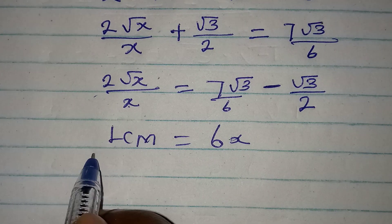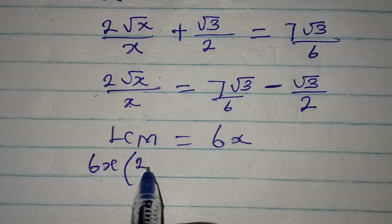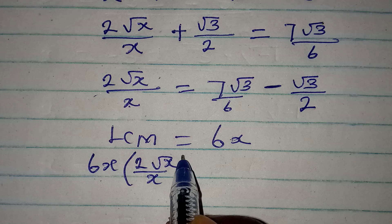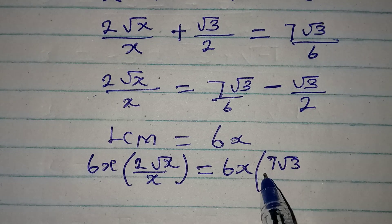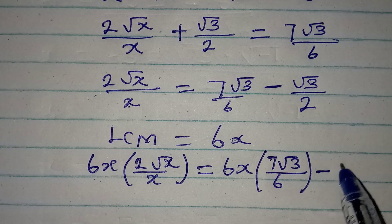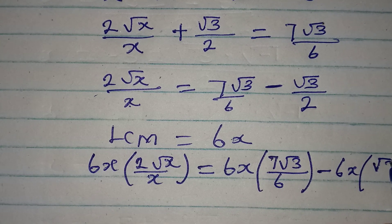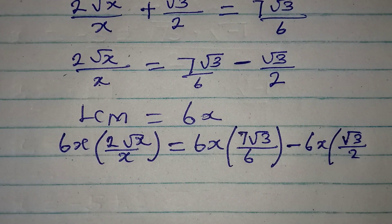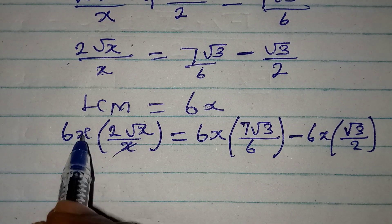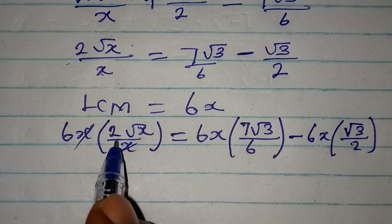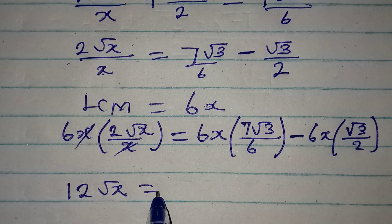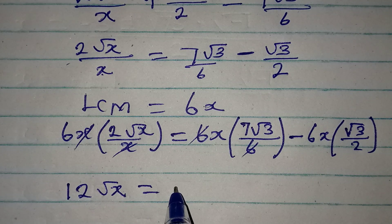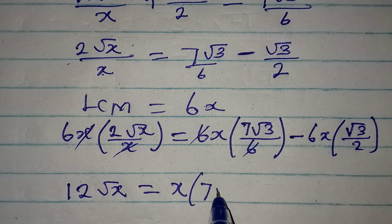Multiply everything by the LCM: 6x multiplied by 2 root x over x equals 6x multiplied by 7 root 3 over 6, then minus 6x multiplied by root 3 over 2. This will cancel, giving us 6 times 2 root x, which gives us 12 root x. It will be equal to — this cancels — and we have x multiplied by 7 root 3.